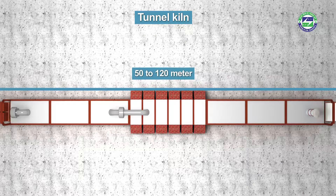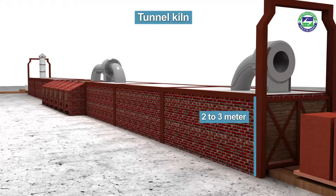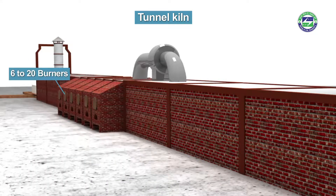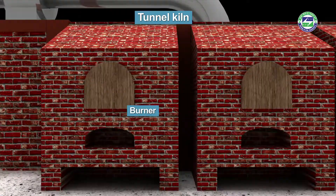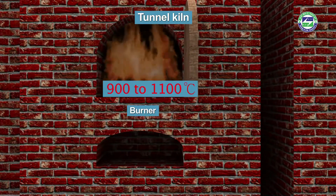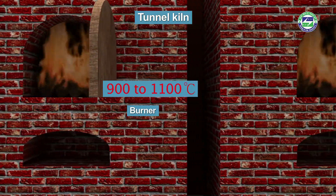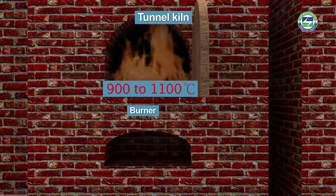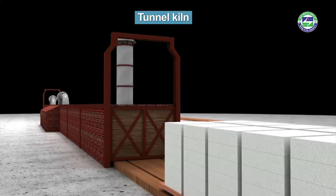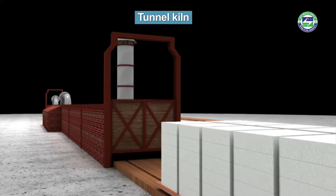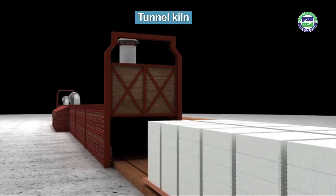A tunnel brick kiln is generally 50 to 120 meters in length, 2 to 3 meters high, with 6 to 20 burners installed in the heating zone. The firing temperature varies from 900 to 1100 degrees Celsius depending on the clay, and the internal movement of products is through cars or rolls.